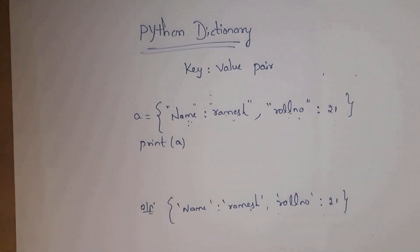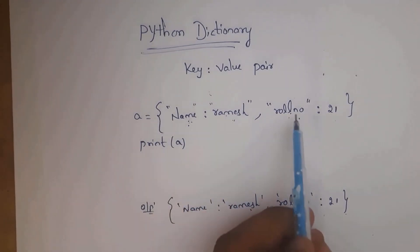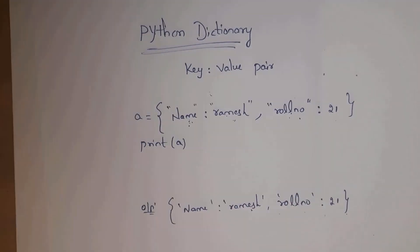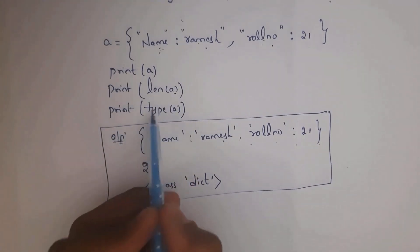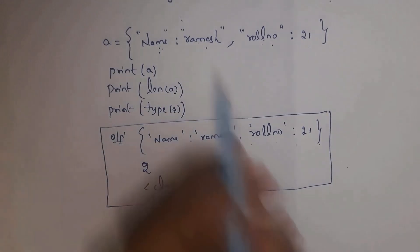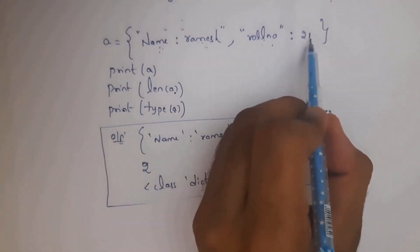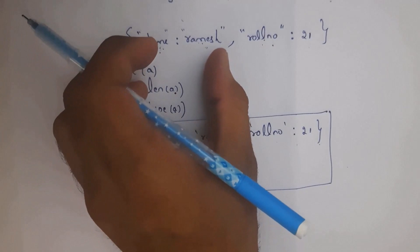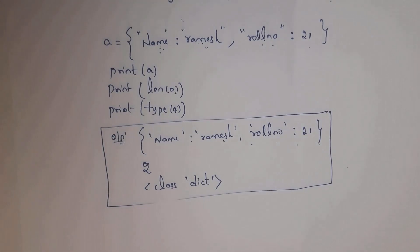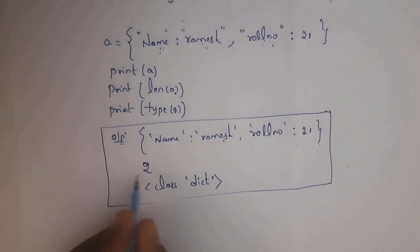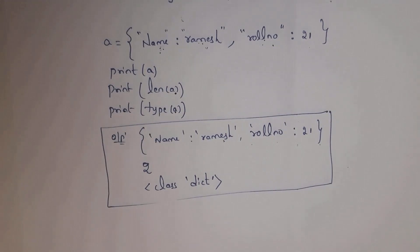Since dictionaries are ordered, if you first wrote 'name': 'ramesh' and then 'roll_number': 21, the output will display name-ramesh first and roll_number-21 after. The len() function identifies the length and the type() function identifies the data type. Here, there are two objects — 'name':'ramesh' and 'roll_number':21 — so len(a) returns 2, and type(a) returns class dict, i.e., dictionary.